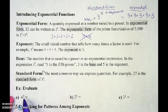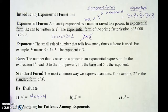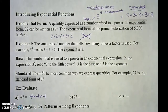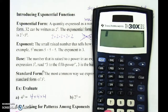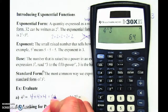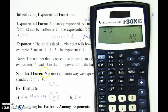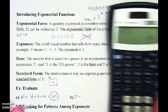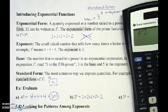Let's try an example. Evaluate: 4 to the 3rd power means 4 times 4 times 4. In my calculator, I can type that out, or I can use the caret button: 4 caret 3. We're looking for 64. Likewise, 2 to the 5th would mean 2 times 2 times 2 times 2 times 2 — that's my expanded form.